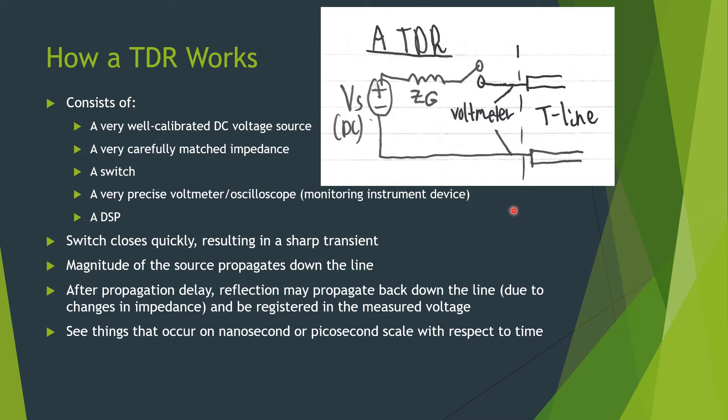The switch closes quickly when the TDR is connected, resulting in a sharp transient, and the magnitude of the source would then propagate down the line. Since the propagation occurs at a fraction of the speed of light, there will be some delay before a wave entering one end of the line would reach the other end. After this propagation delay, a reflection may propagate back down the line due to changes in impedance and be registered in the measured voltage of the TDR. Using a TDR, we can see things that occur on a nanosecond or even picosecond scale with respect to time.